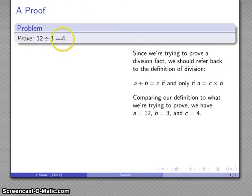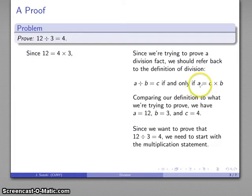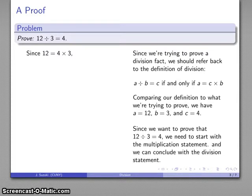Comparing what we want to prove with our definition tells us that a is 12, b is 3, and c is 4. Since I want to prove this, I need to start with the statement a equals c times b. Filling in the values: is it true that 12 equals 4 times 3? Yes, that's correct. Starting with that true statement and following the definition of division — since I have a product I also have the corresponding quotient — since 12 equals 4 times 3, that tells me that 12 divided by 3 is equal to 4.